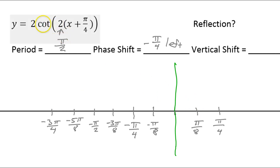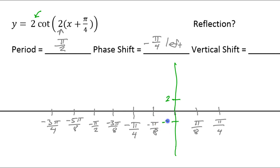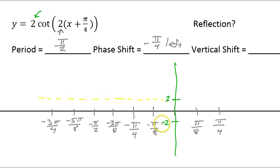Cotangent doesn't really have an amplitude, but the A value must be recorded. So I'm going to mark 2 up high and negative 2 down low. I'm going to put a yellow dotted line for the A value — this is optional, but it helps you make your graph more accurate.